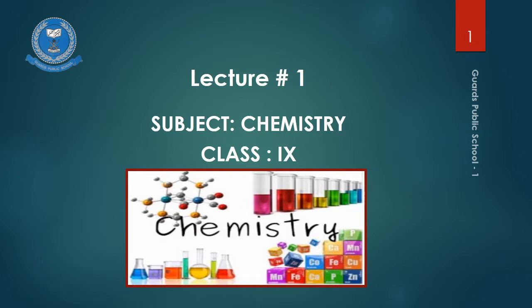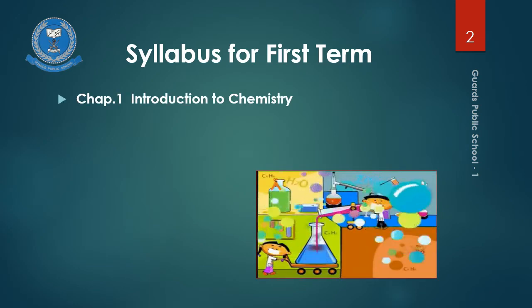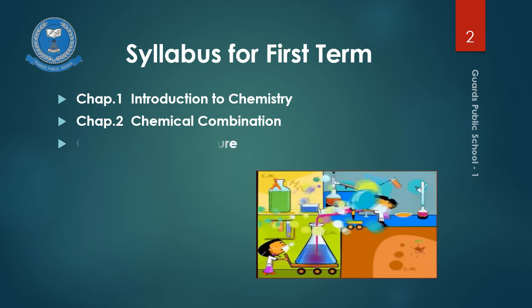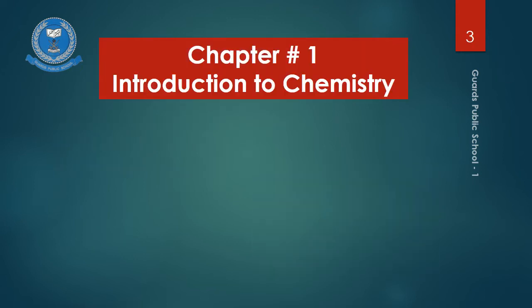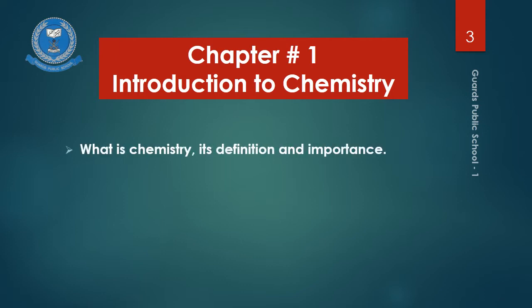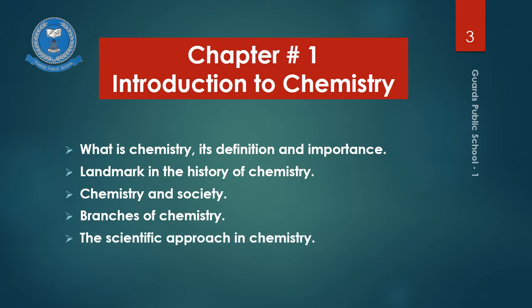We hope you will try to understand. If there are still some queries, we will discuss them later in a one-hour class once a week arranged by your class teacher. We have selected four chapters for the first steps: chapter one is Introduction to Chemistry, chapter two is Chemical Combination, chapter three is Atomic Structure, and chapter four is States of Matter. At the end of the chapter you will understand the definition of chemistry and its importance, landmarks in the history of chemistry, chemistry and society, and the different branches of chemistry.